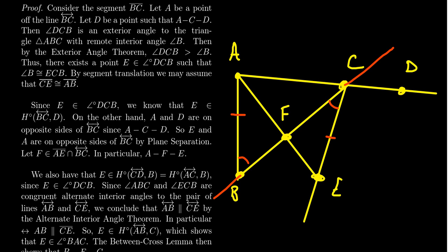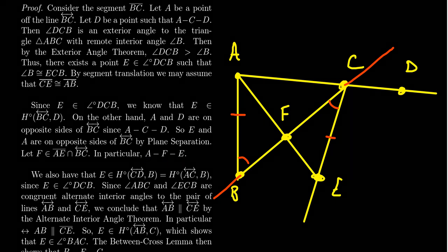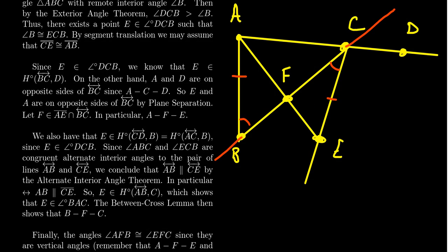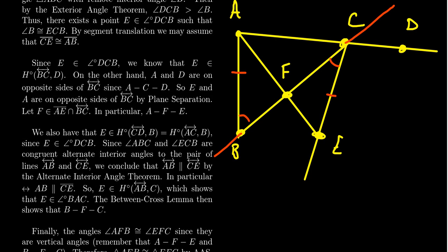By construction, F is between A and E. The diagram suggests F is also between B and C, though we haven't proven that yet. This point F is our candidate for the midpoint of segment BC — we need to prove it actually is the midpoint.